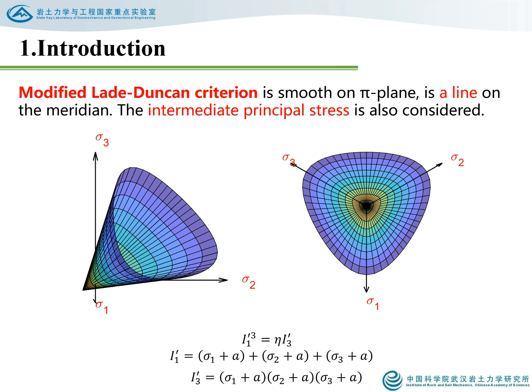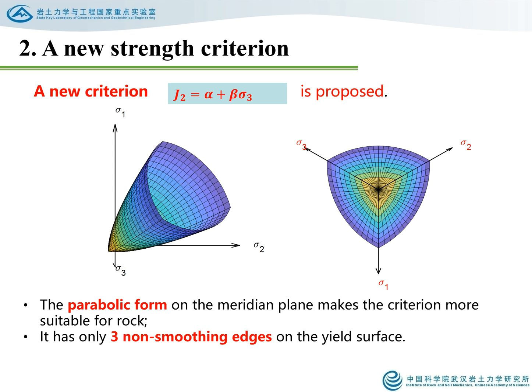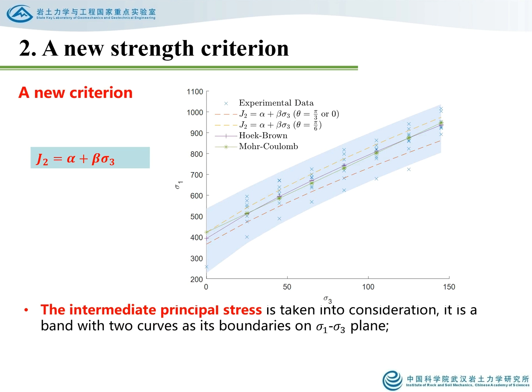A new criterion, J = α·J^β × σ, is proposed. The parabolic form on the meridian plane makes the criterion more suitable for rock. It has only smooth, non-singular edges on the yield surface. The intermediate principal stress is also considered. It is a band with two curves as its boundaries on the deviatoric plane.